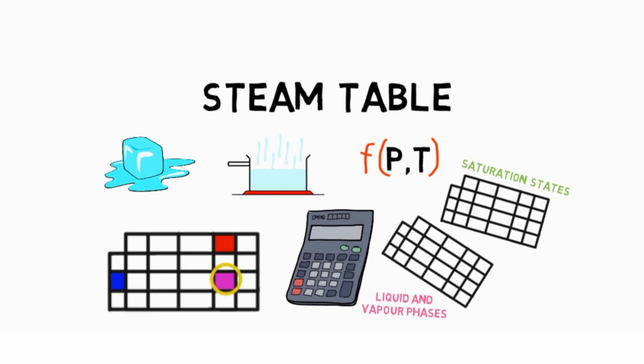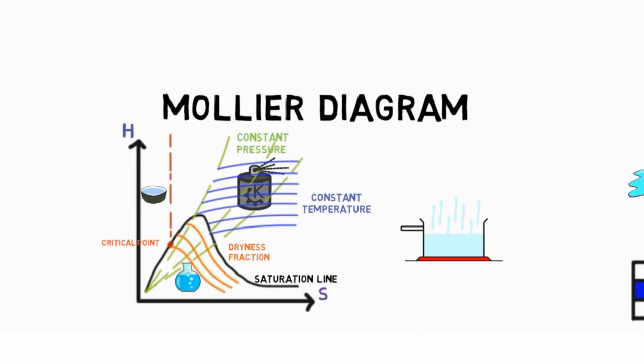Hence, we first saw what a steam table is, then learned about the Mollier diagram.